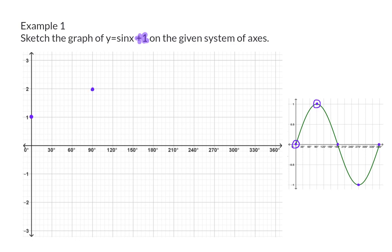Then we had an x-intercept at 180 degrees and 0, which will now move up to 1.